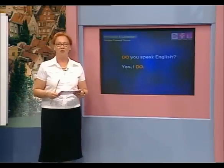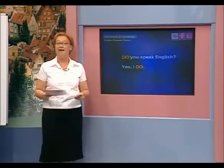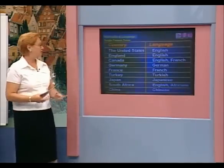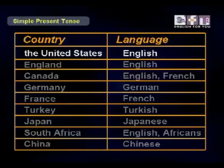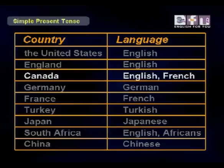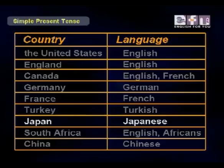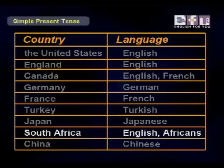Okay, now we're going to look at the names of countries and the languages. Here we have: the United States — English. England — English. Canada — English and French. Germany — German. France — French. Turkey — Turkish. Japan — Japanese. South Africa — English, Afrikaans. And finally, China — Chinese.